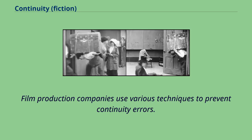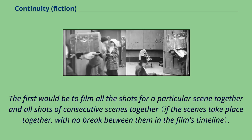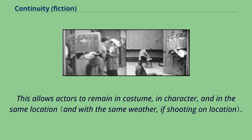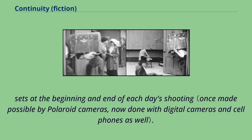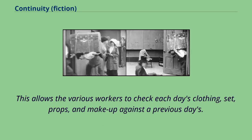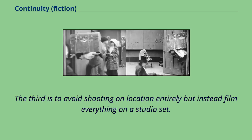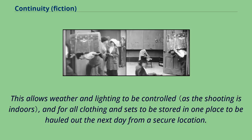Film production companies use various techniques to prevent continuity errors. The first would be to film all the shots for a particular scene together and all shots of consecutive scenes together. This allows actors to remain in costume, in character, and in the same location. The second major technique is for costume designers, production designers, prop masters, and makeup artists to take instant photographs of actors and sets at the beginning and end of each day of shooting. This allows the various workers to check each day's clothing, set, props, and makeup against the previous days. The third is to avoid shooting on location entirely but instead film everything on a studio set. This allows weather and lighting to be controlled, and for all clothing and sets to be stored in one place to be hauled out the next day from a secure location.